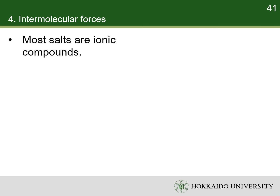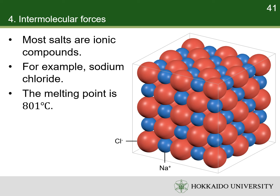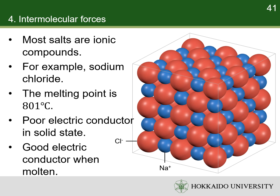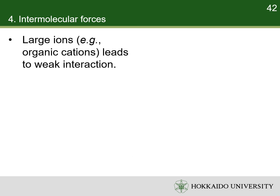For example, most salts are ionic compounds. In sodium chloride, the sodium cations and chloride anions are bonded with ionic bonds and form an ionic crystal. The melting point of sodium chloride is 801 degrees Celsius. Ionic compounds are usually very poor electric conductors in the solid state. However, they are good electric conductors when molten because the mobile ions carry charge through the liquid. Some salts, especially those with organic cations, have weak ionic bonding because of the large sizes of the ions.